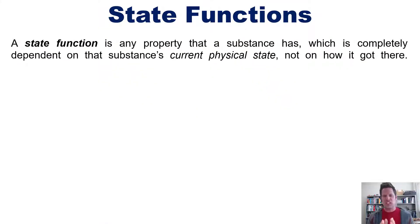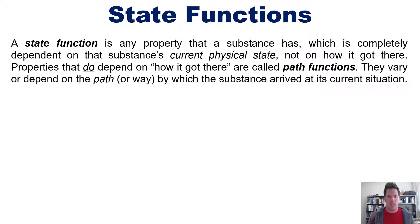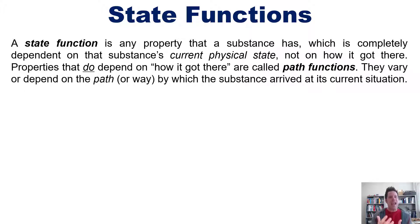A state function is any property that a substance has which is completely dependent on that substance's current physical state, and not on how it got there. Properties that do depend on how it got there are called path functions — they vary or depend on the path or way by which the substance arrived at its current situation.